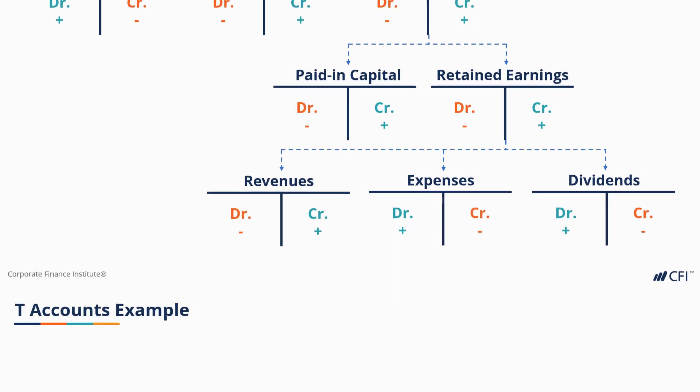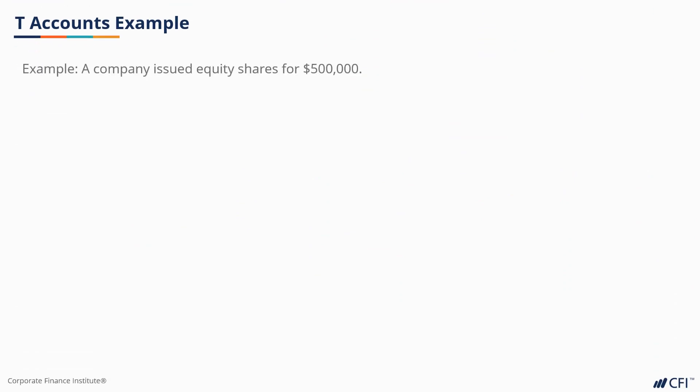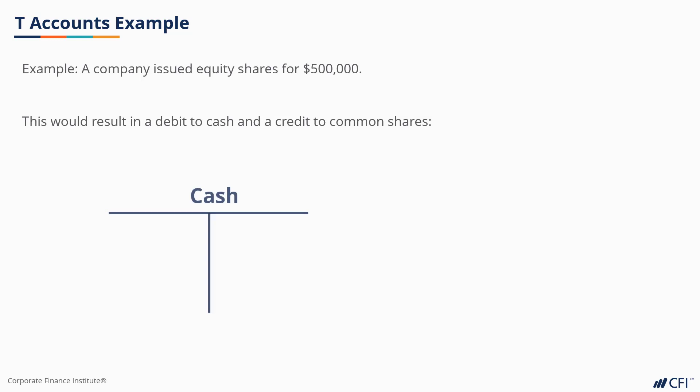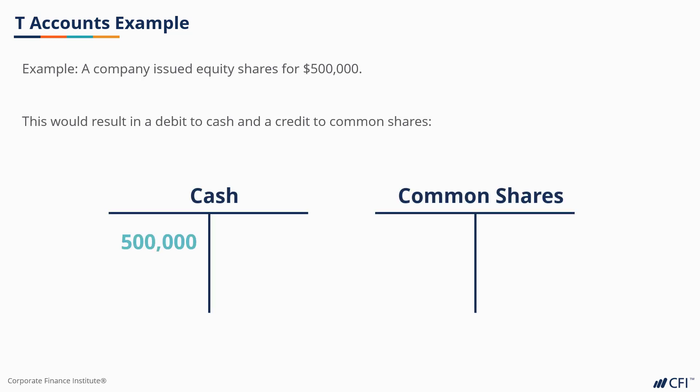Let's look at a specific example now to make the point. Imagine that a company issues equity shares for $500,000. There are two transactions as we mentioned. A debit to cash, which is an increase in cash — that's the proceeds the company receives from issuing the equity. And on the balance sheet, there is a credit to common shares of $500,000. Remember, the balance sheet always has to balance. So by debiting cash $500,000 and crediting common shares $500,000, the balance sheet continues to balance.